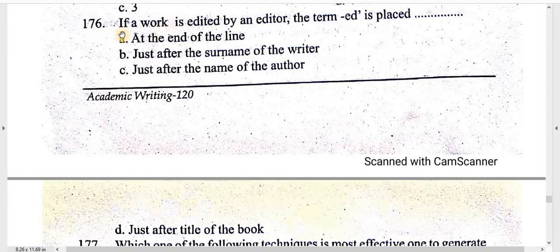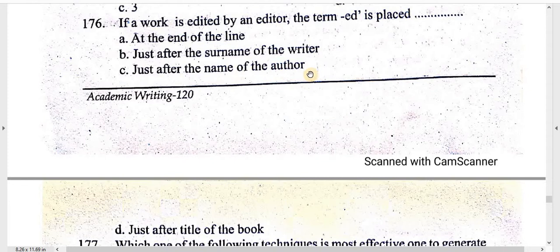Question number 176: if a work is edited by an editor, the term 'ed.' is placed: at the end of the line, just after the surname of the writer, just after the name of the author, just after the title of the book.